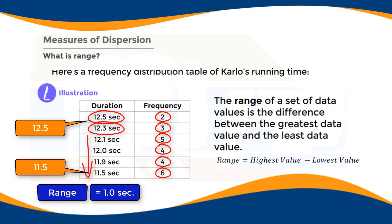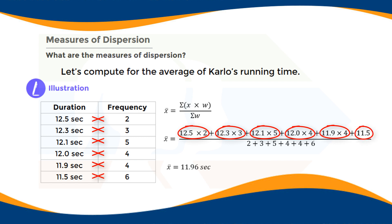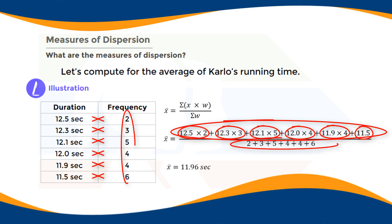The next question is: what is the average of Carlo's running time? To find the mean, we multiply each data value by its frequency: 12.5 times 2, 12.3 times 3, 12.1 times 5, 12.0 times 4, 11.9 times 4, and 11.5 times 6. We then find the sum of all these products and divide by the number of cases, which is 24.